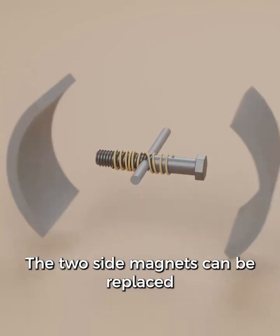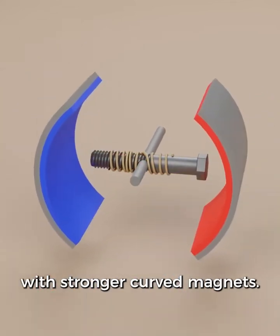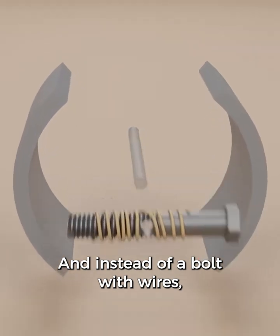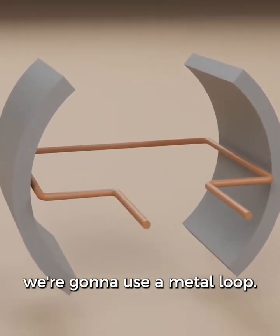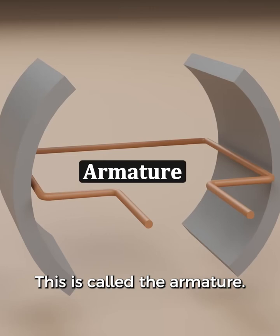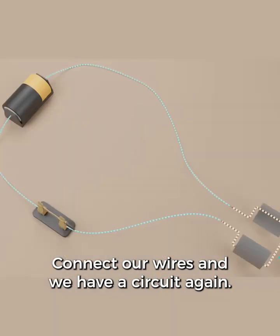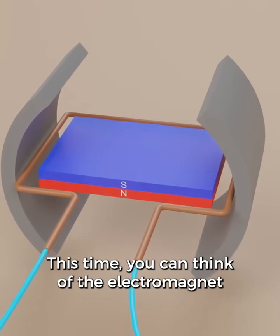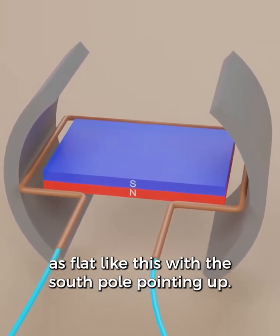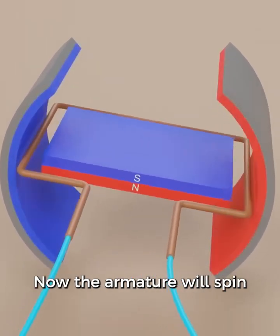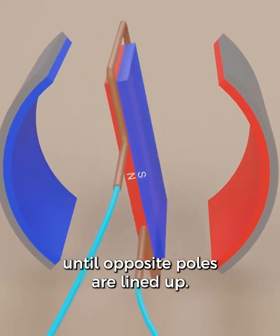The two side magnets can be replaced with stronger curved magnets. And instead of a bolt with wires, we're going to use a metal loop. This is called the armature. Connect our wires and we have a circuit again. This time you can think of the electromagnet as flat like this with the south pole pointing up. Now the armature will spin until opposite poles are lined up.